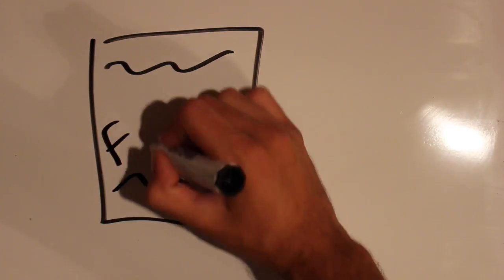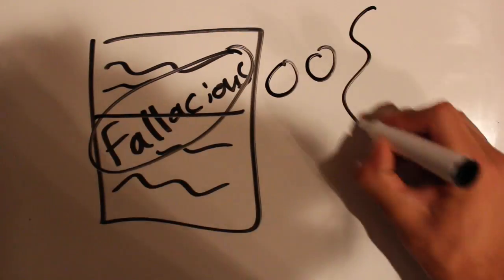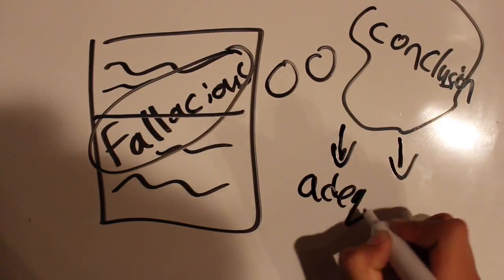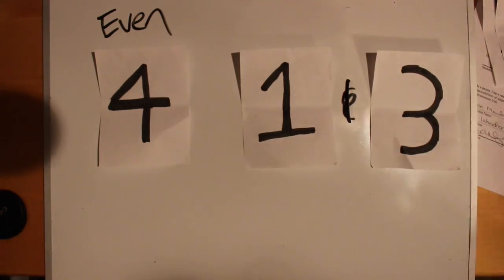It should be noted it is not always fallacious to draw a conclusion about part of a whole, as long as you provide adequate evidence. An example: four is an even number, one and three are parts of four.